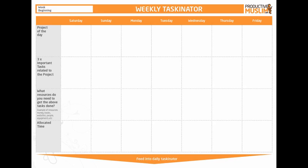Think about what projects you have each day — a project doesn't have to be massive; it's anything with more than one task and a number of action points. Identify one important project of the day and work on the tasks for it. I hope this clarifies how to use the weekly taskinator. If you have any queries or feedback, please send us an email at ProductiveMuslim@gmail.com or visit our website under the resources section and add a comment to the weekly taskinator post, inshaaAllah. Jazakumullah khair. Assalamualaikum warahmatullahi wa barakatuh.